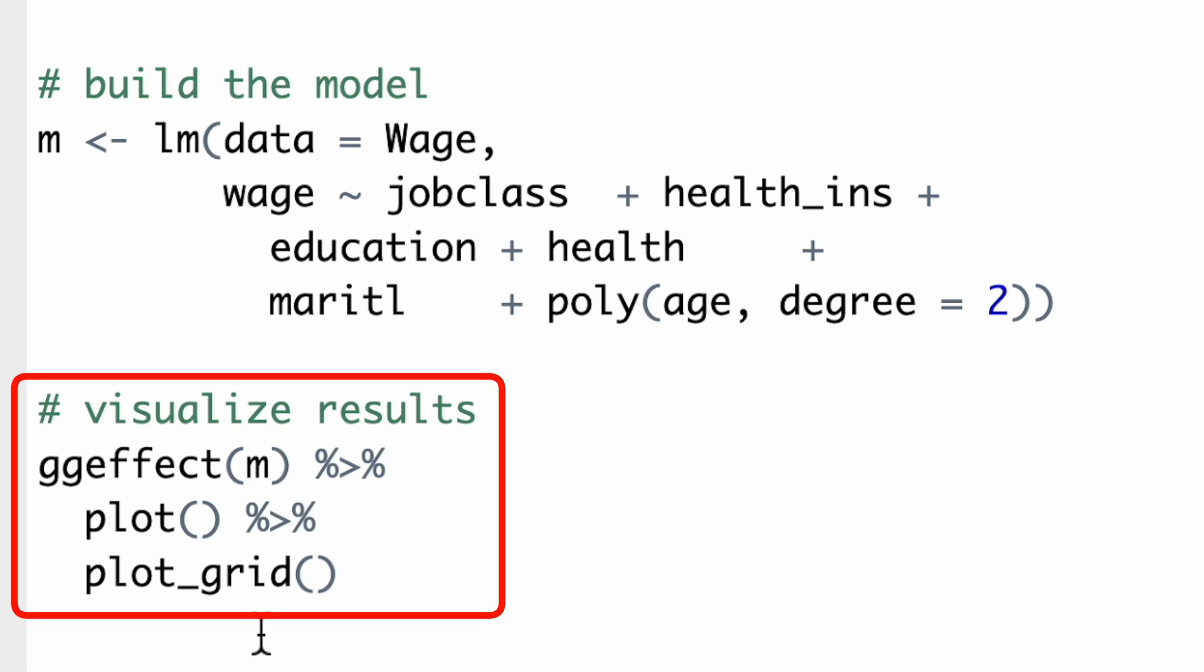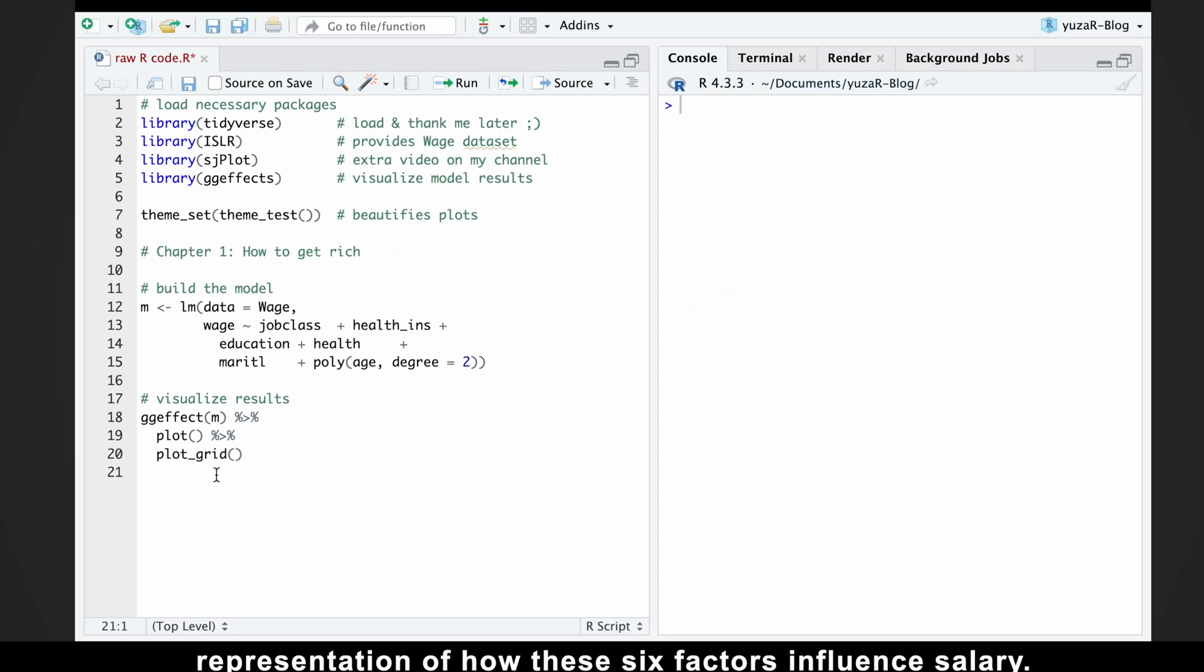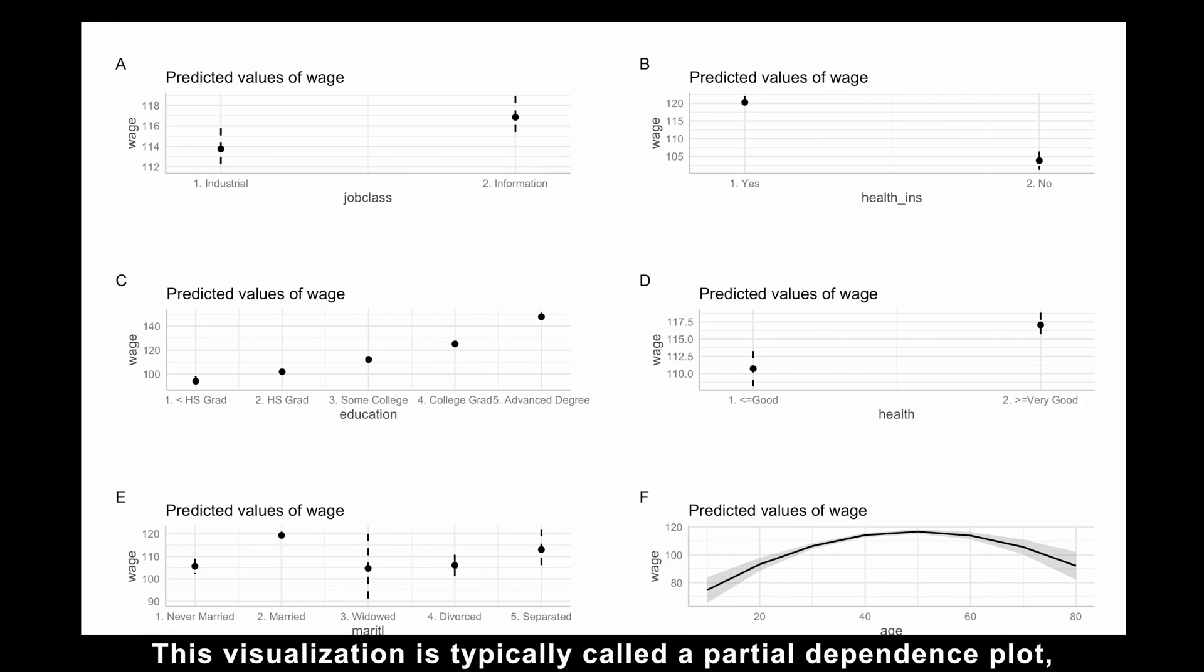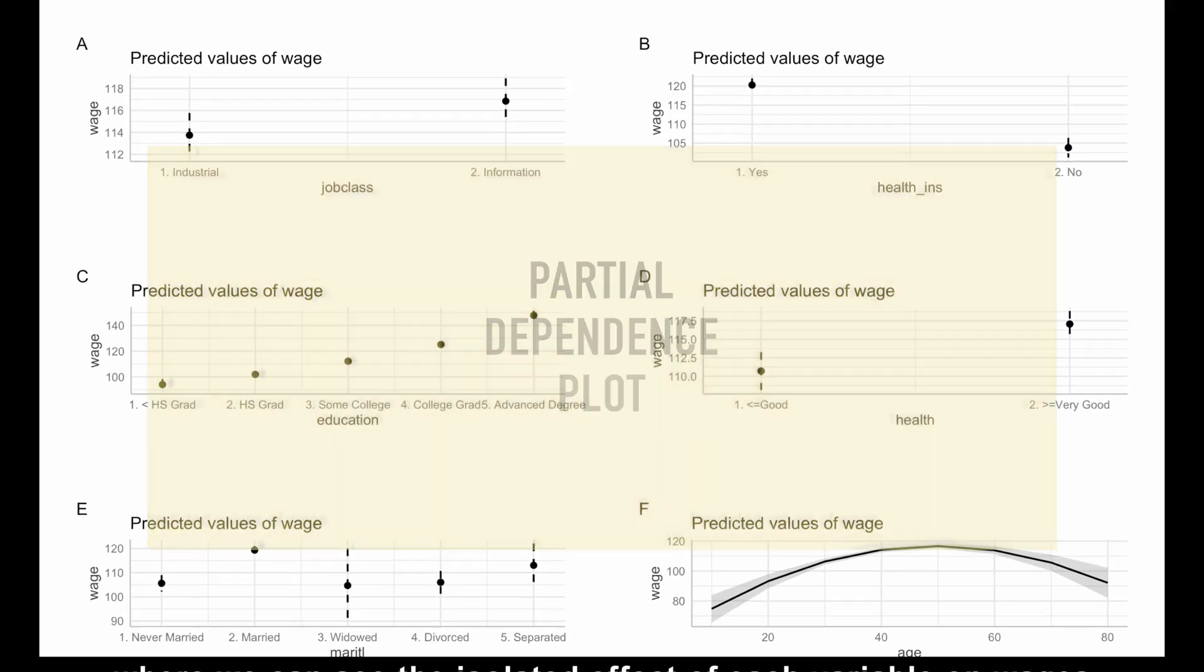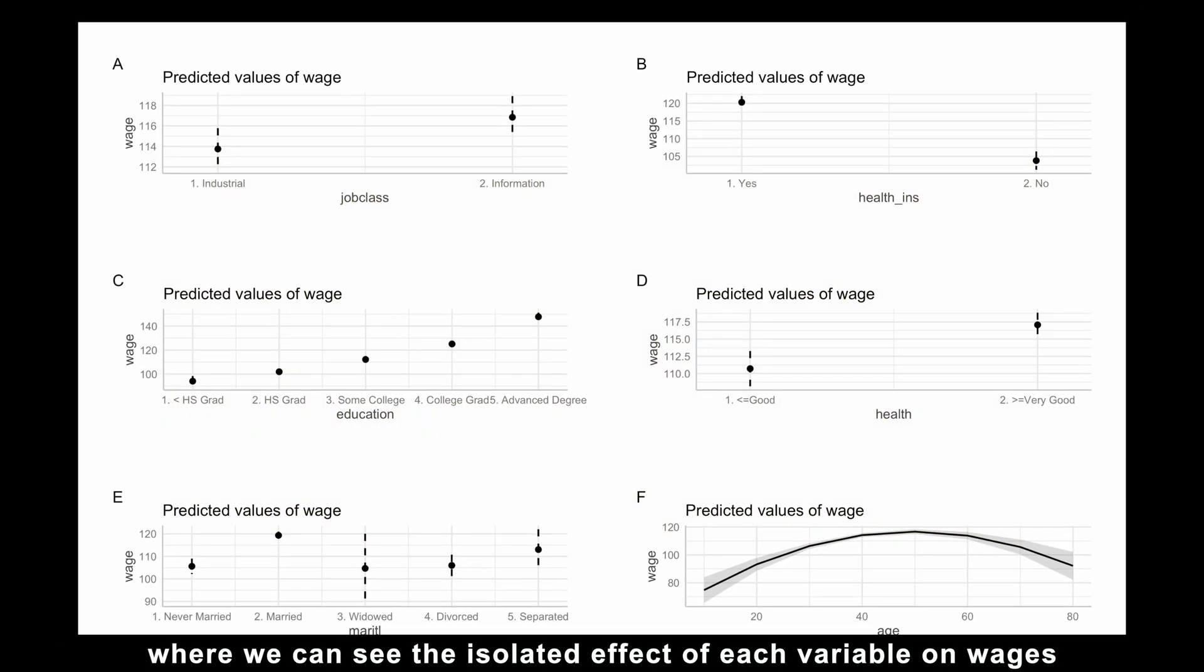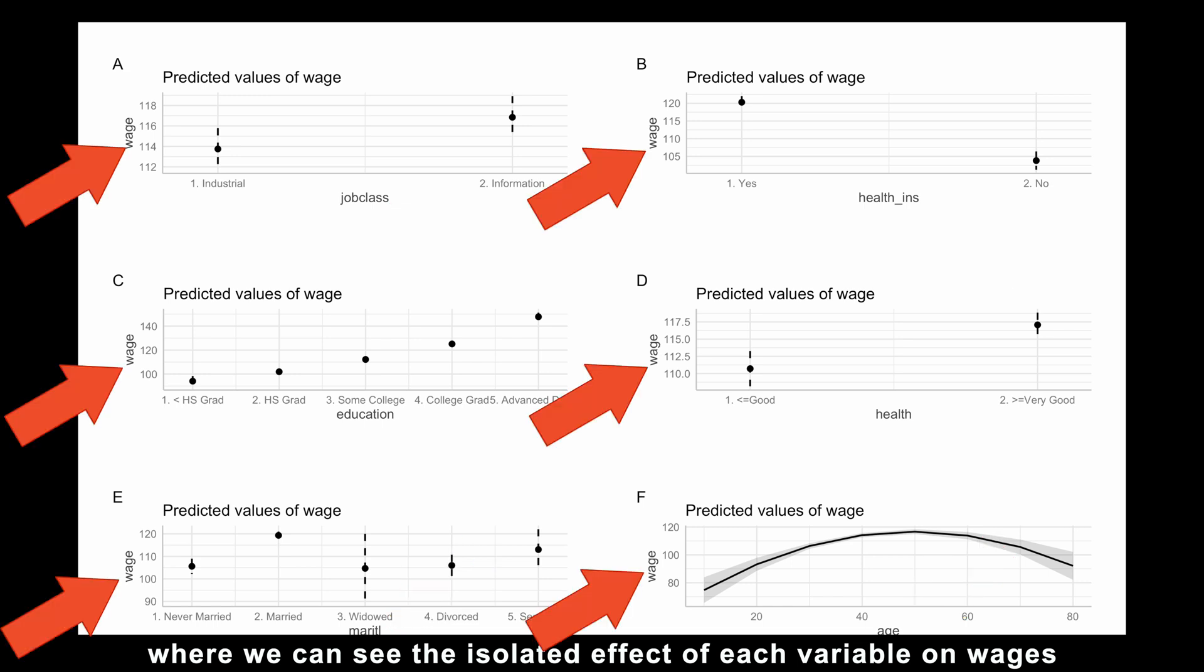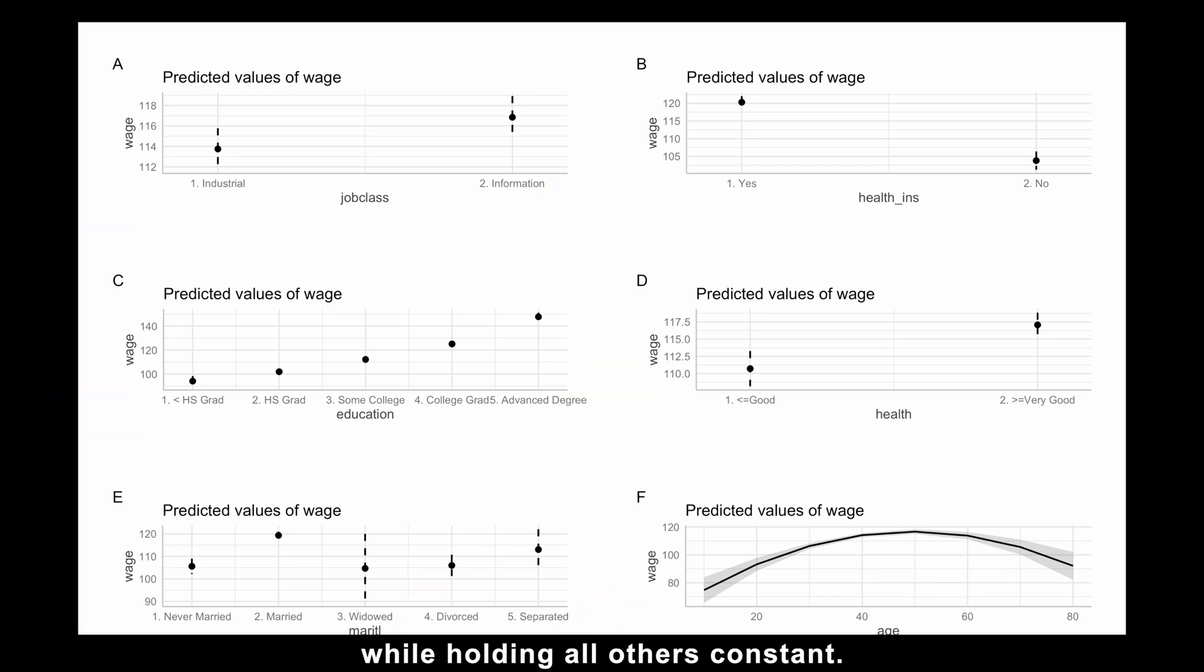The second line of the code uses the model to create a visual representation of how these six factors influence salary. This visualization is typically called a partial dependence plot, where we can see the isolated effect of each variable on wages while holding all others constant.